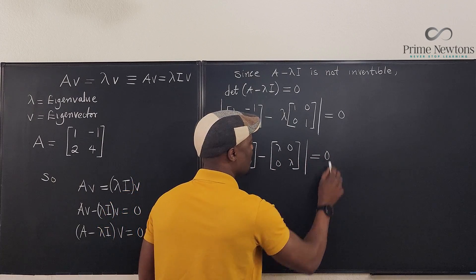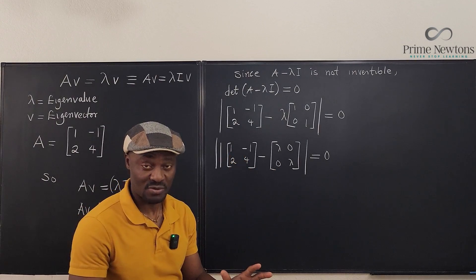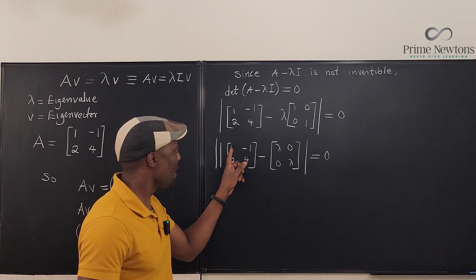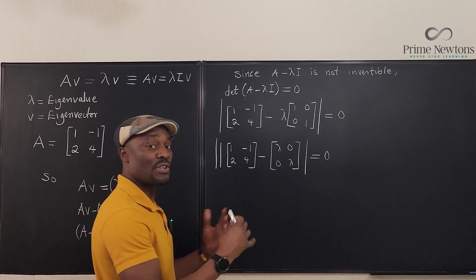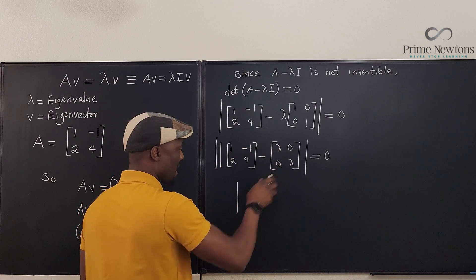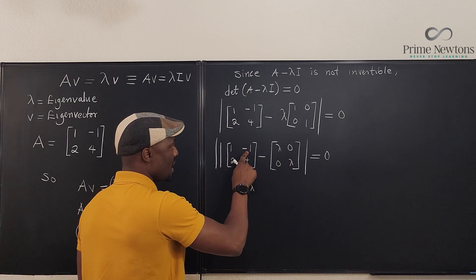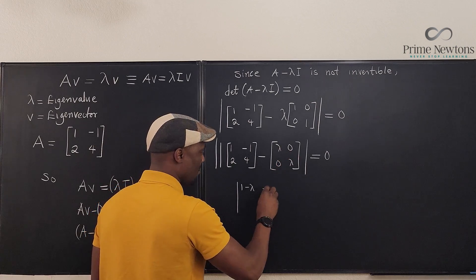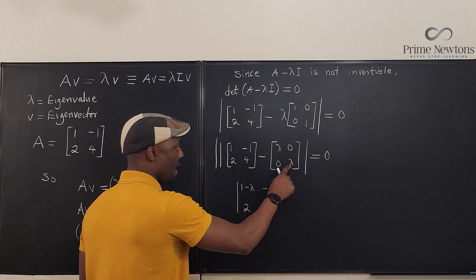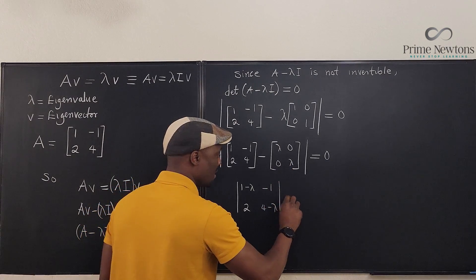Let's subtract these matrices — we can do this since they have the same dimension. Subtracting corresponding entries gives us the matrix [1-λ, -1; 2, 4-λ]. The determinant of this matrix must equal zero.